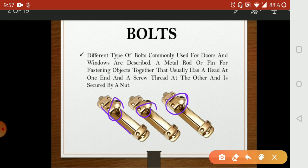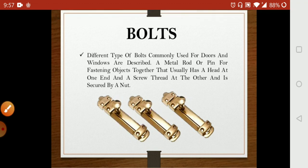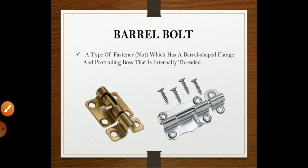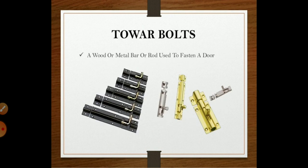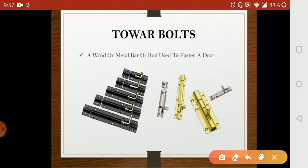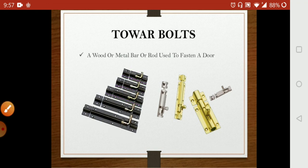This is a metal rod. There are lots of types in bolts. The first one is the tower bolt. A tower bolt is a wood or metal bar or rod that is used to fasten a door. You can see here there are many sizes. This is called the tower bolt.